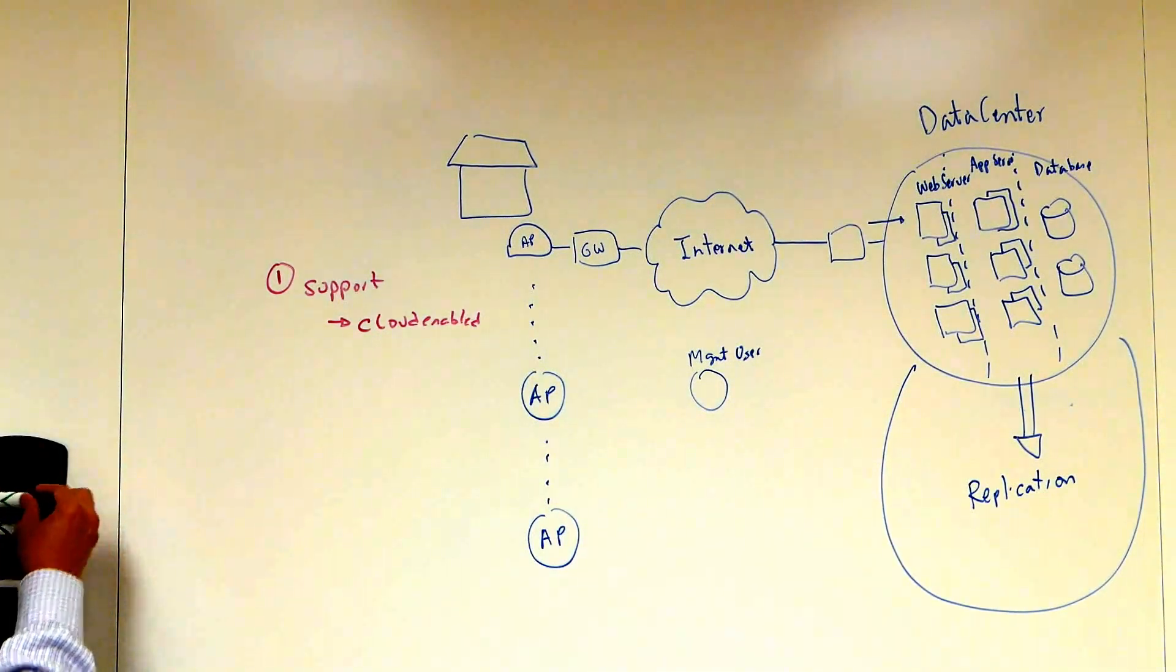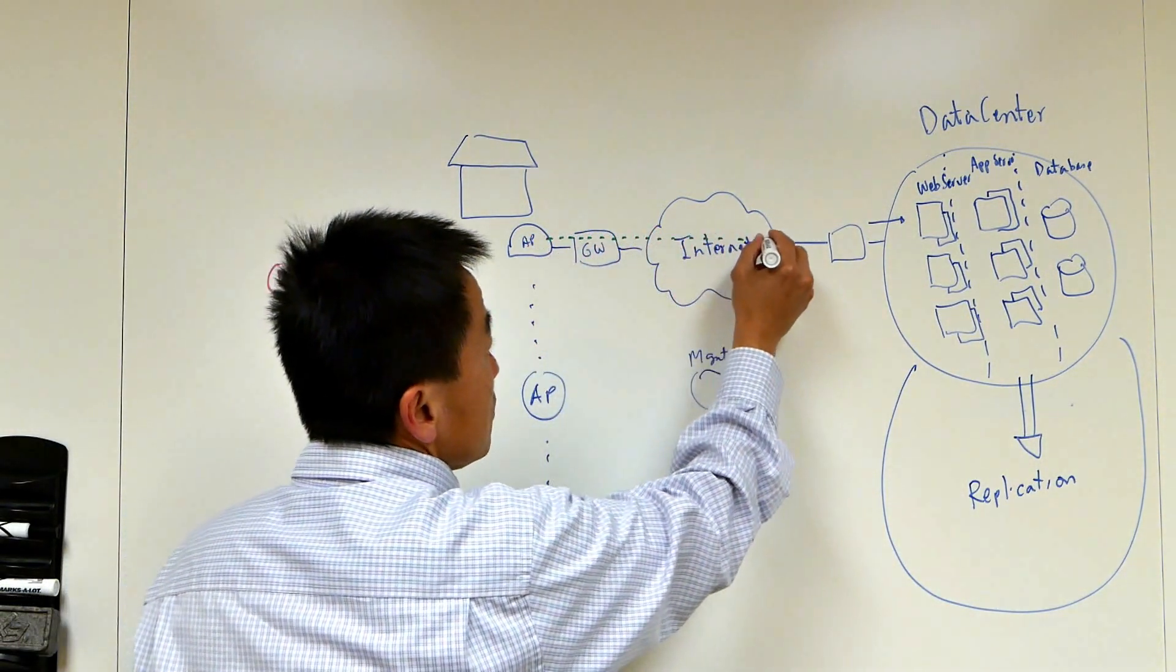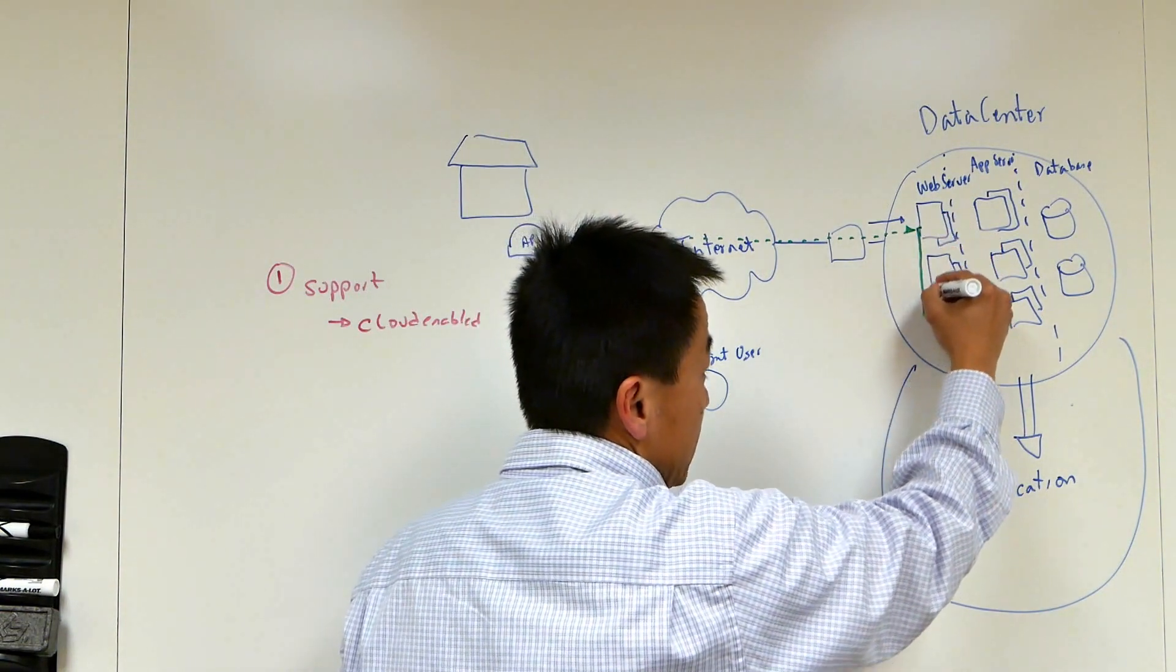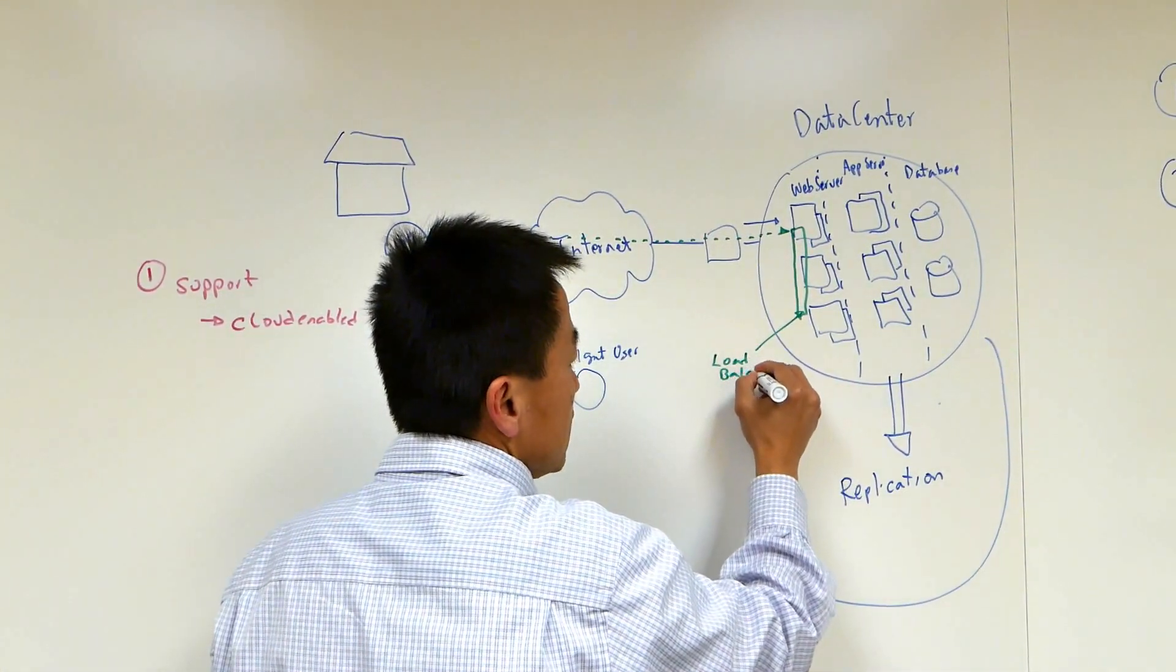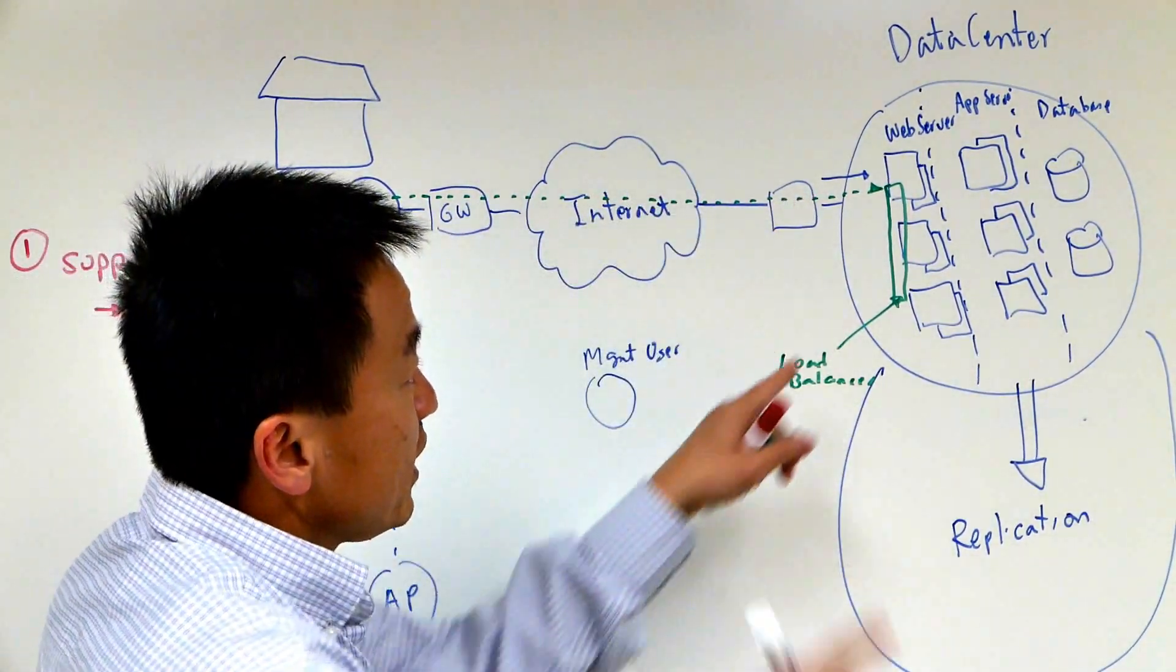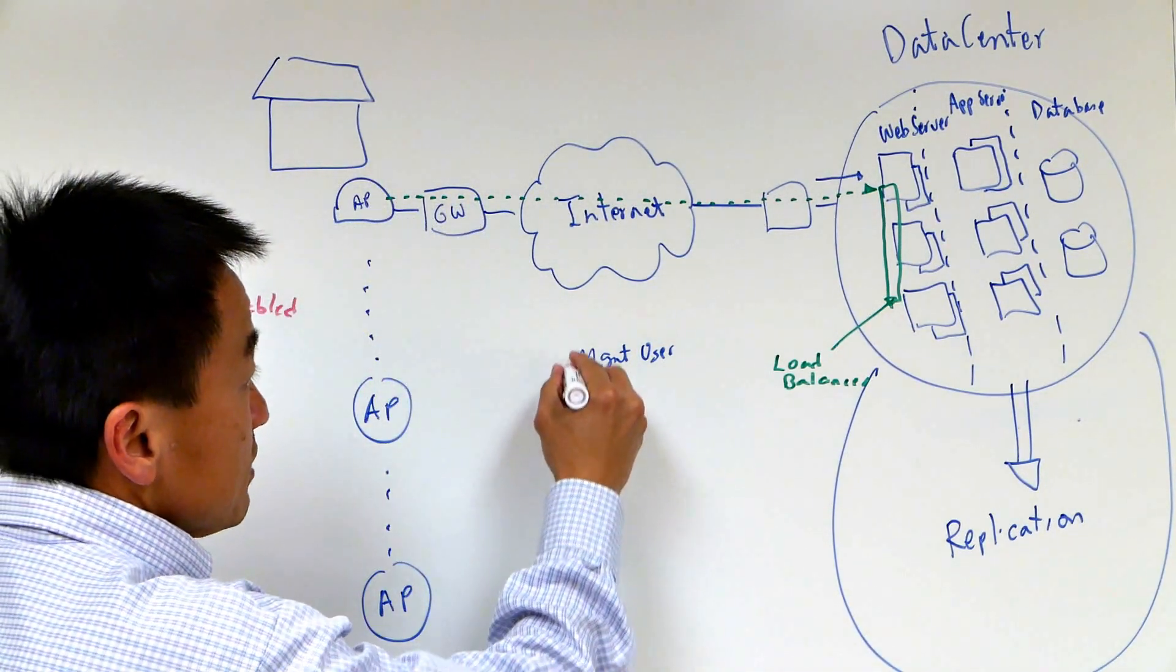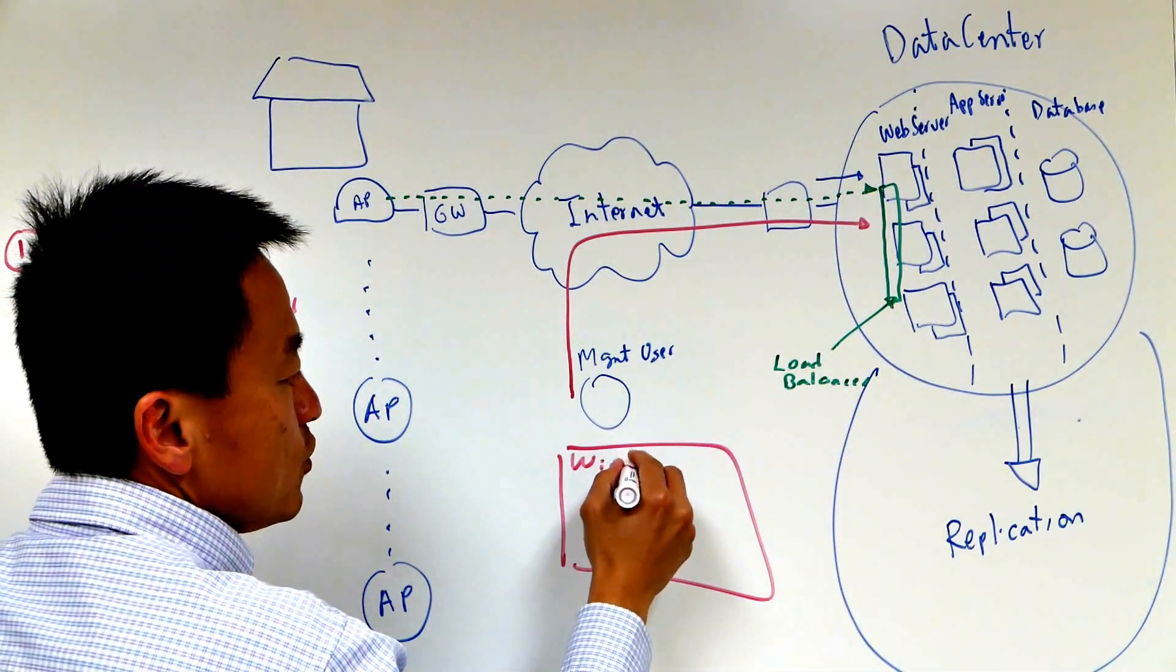And what it does, once you plug in the access point at home, first thing it does, the access point automatically calls what we call call home, basically calling the data center. And here, I didn't really draw this, but there's really a front-end load balancer that will handle the request coming from both the access point as well as later on the management user. Once the access point connects to the Business Central, it automatically registers into that environment.